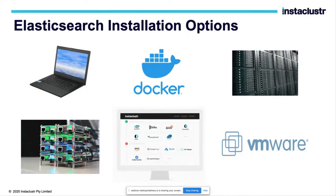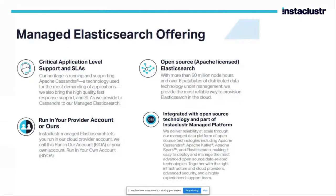Elasticsearch installation is very flexible — you can install it on Raspberry Pi, Docker, or VMware. At InstaCluster, we provide a managed platform for OpenDistro for Elasticsearch — you can go on our website, click a few buttons, and have your cluster up and running. We provide SLAs and have a support team around the globe who will take care of your cluster and proactively contact you if there is an issue.